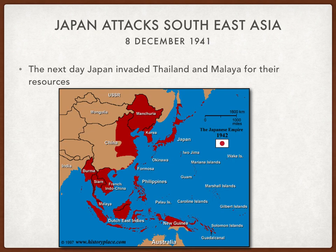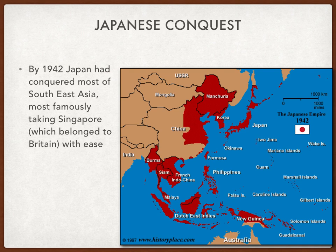The day after the Pearl Harbour attack, Japan invaded Thailand, known as Siam, and Malaya, moving in from Indochina which they had taken on the 22nd of September 1940. By 1942, Japan had conquered most of Southeast Asia — all the areas shown in red on the map. Most famously they took Singapore, which had belonged to Britain, with very little resistance from the British army, which really damaged Britain's prestige in Asia and busted many myths around British power.